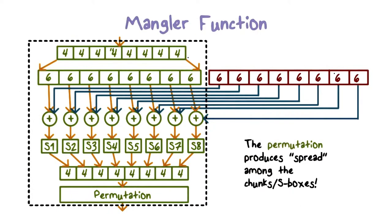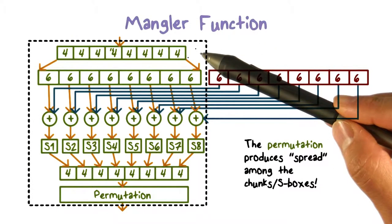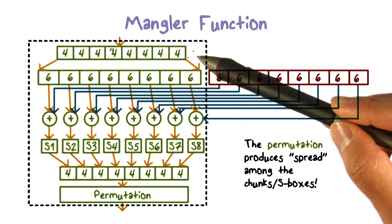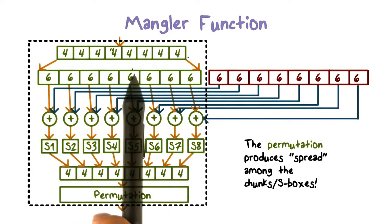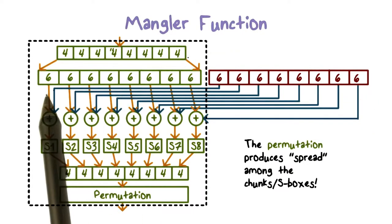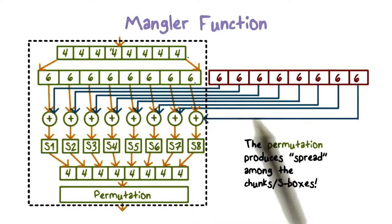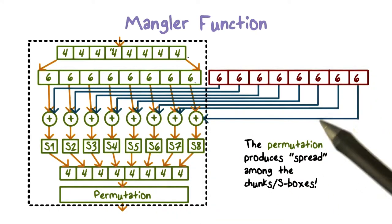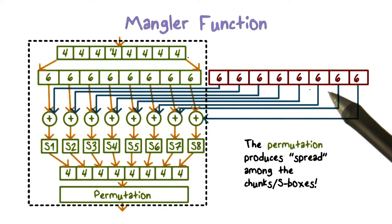The Mangler function performs the bulk of processing in a DES round. It takes the right half of the input, expands the 32-bit data into 48-bit data, and XORs it with the per-round key.